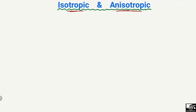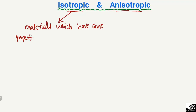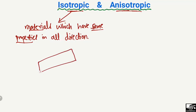The first type is isotropic materials. These are materials which have the same or identical properties in all directions. Such types of materials are known as isotropic materials.